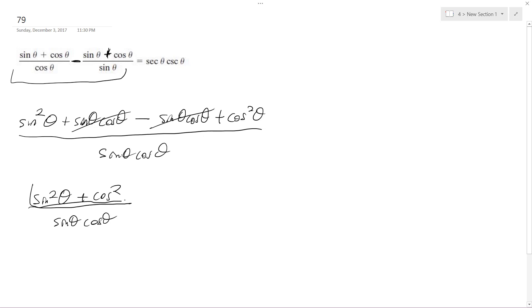So this becomes 1. Yeah, that makes sense. So 1 over sine theta and then 1 over cosine theta, which is 1 over sine theta times 1 over cosine theta, which is the same thing as saying cosecant theta times secant theta.